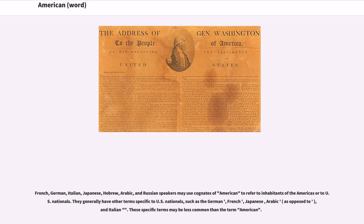French, German, Italian, Japanese, Hebrew, Arabic, and Russian speakers may use cognates of American to refer to inhabitants of the Americas or to U.S. nationals. They generally have other terms specific to U.S. nationals, such as the German, French, Japanese, and Arabic equivalents, as opposed to Italian. These specific terms may be less common than the term American.